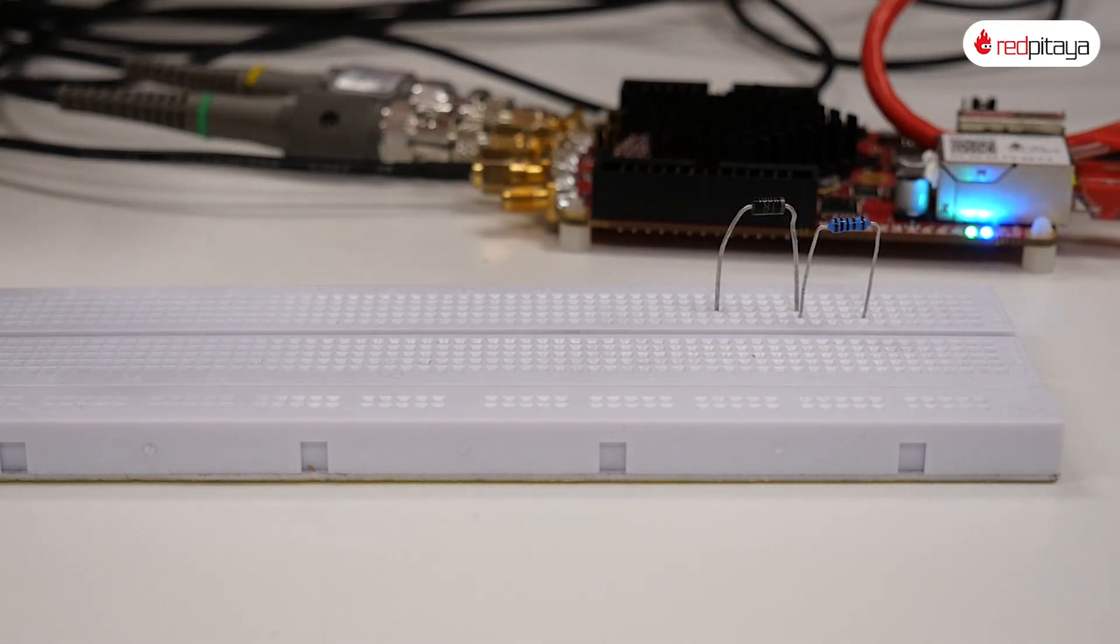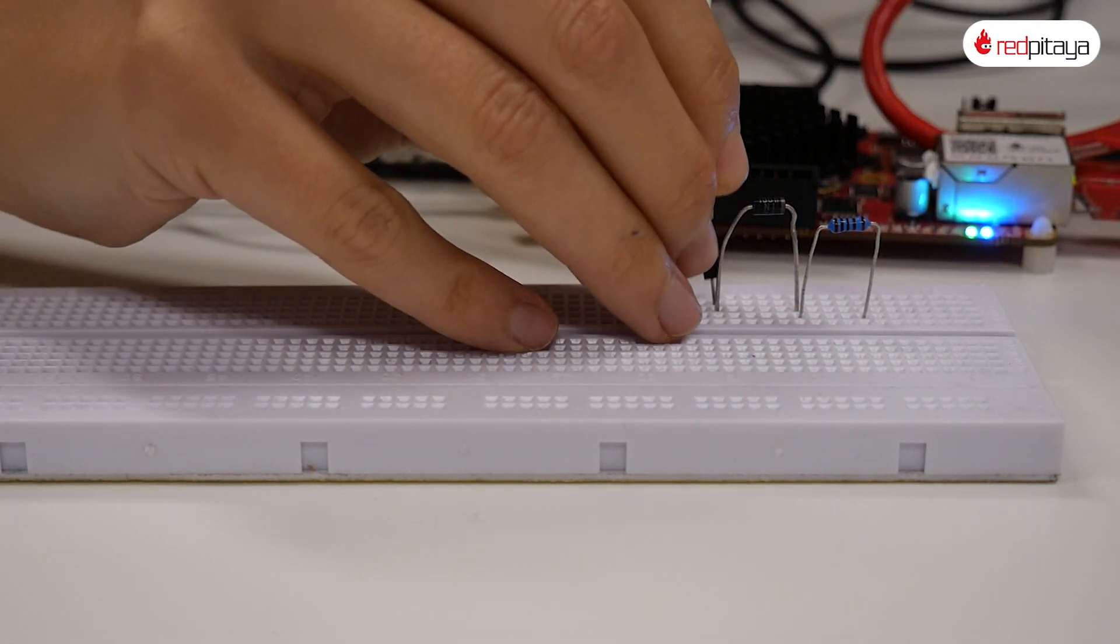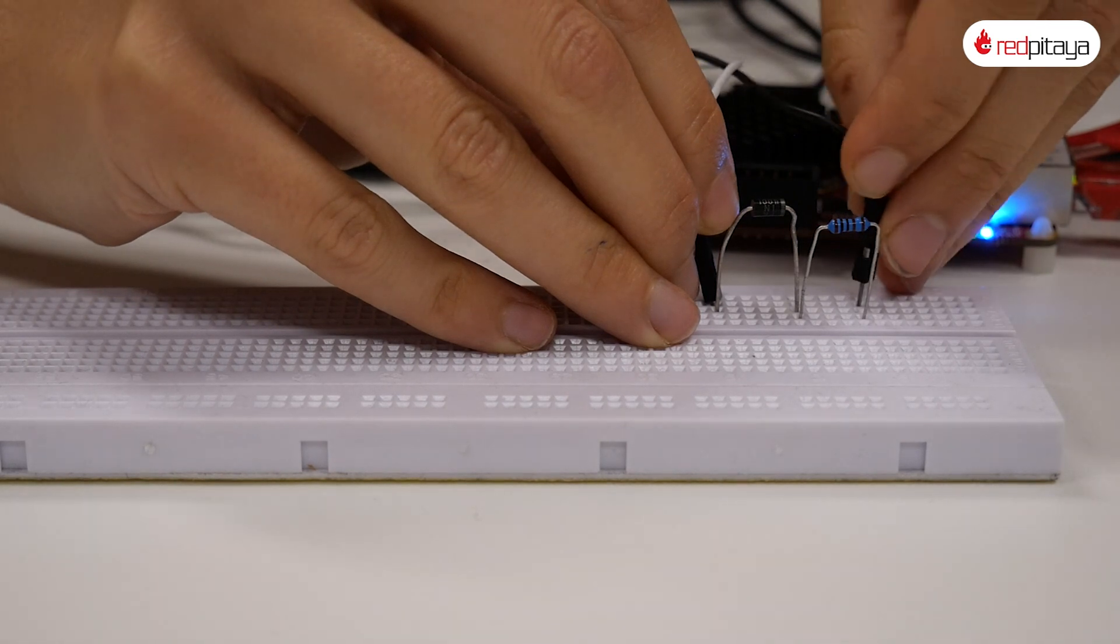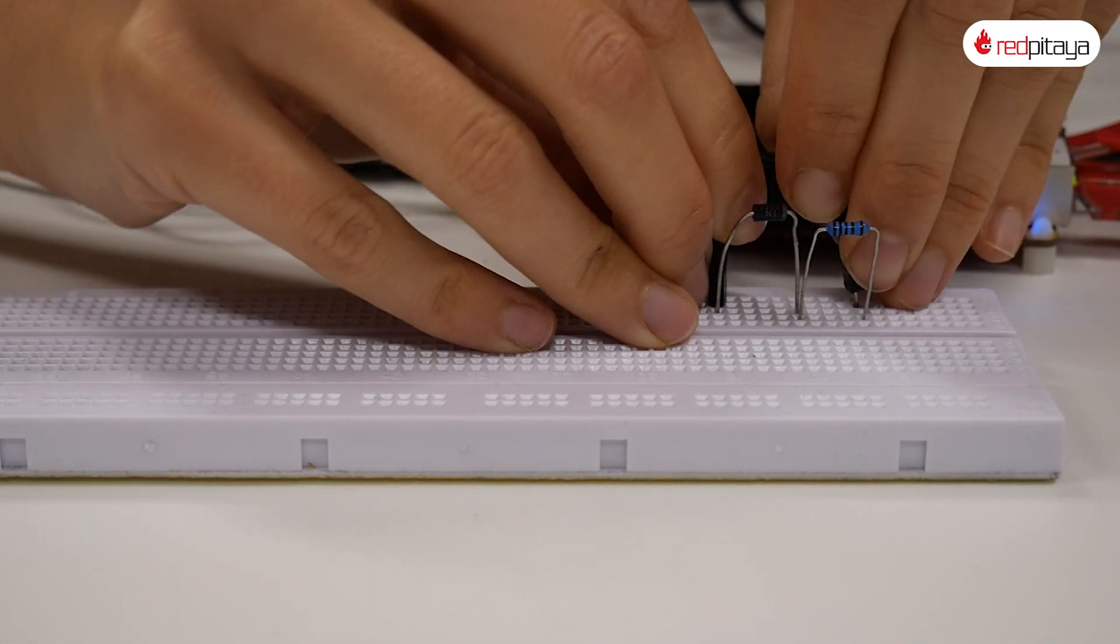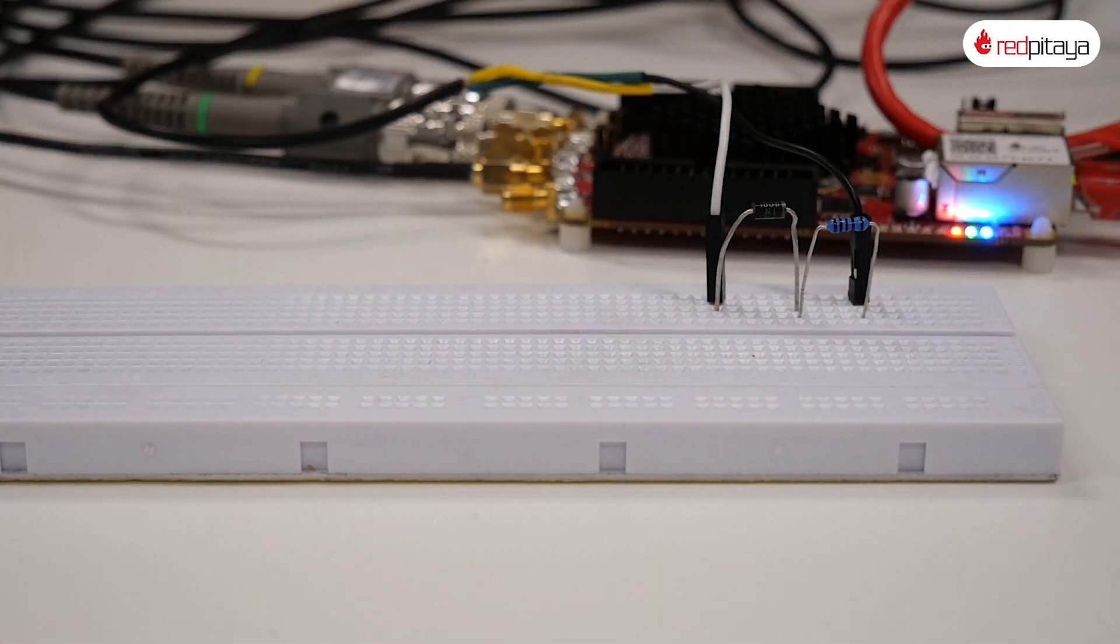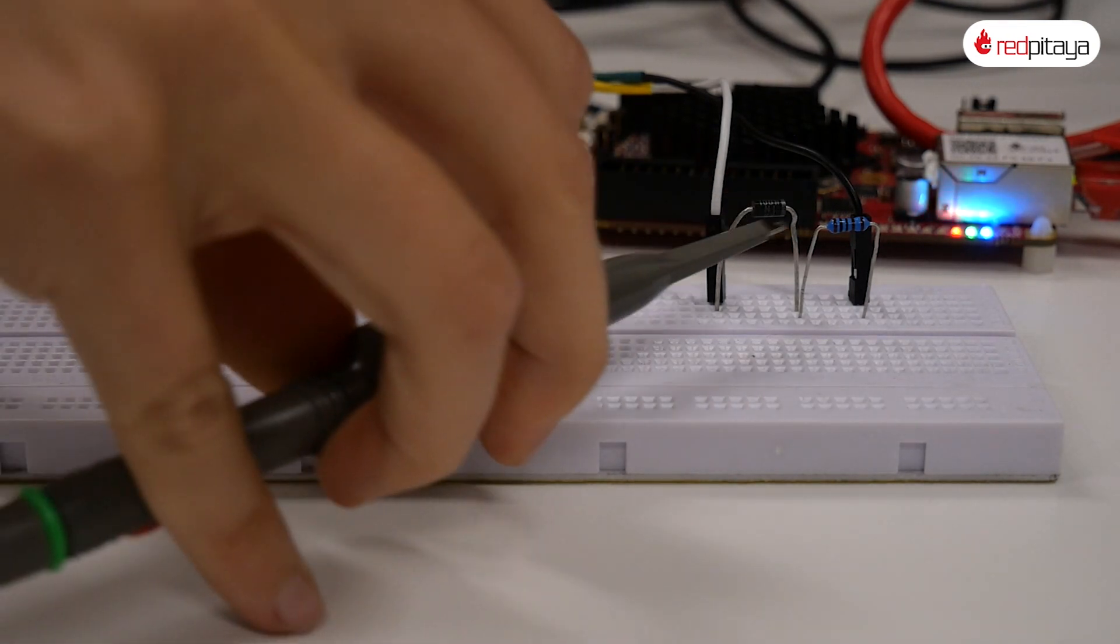Red Pitaya's output goes here. Diode on the output, load it with a one kiloohm resistor. Connect the input probes and let's take a look at the scope.